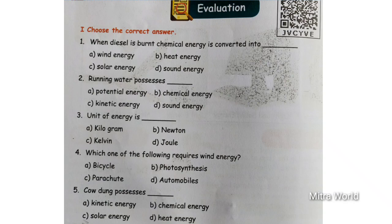Fourth one — which one of the following requires wind energy? Bicycle, photosynthesis, parachute, automobiles. Which one of the following requires wind energy? Very good children — wind energy is required for the parachute. The answer is parachute.